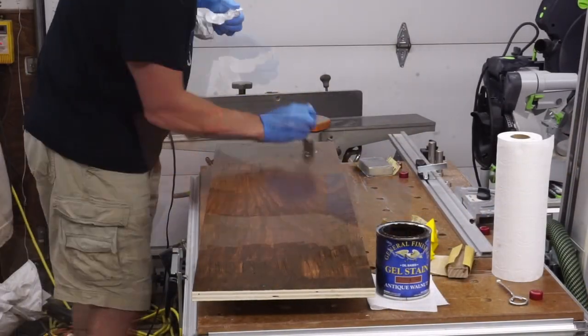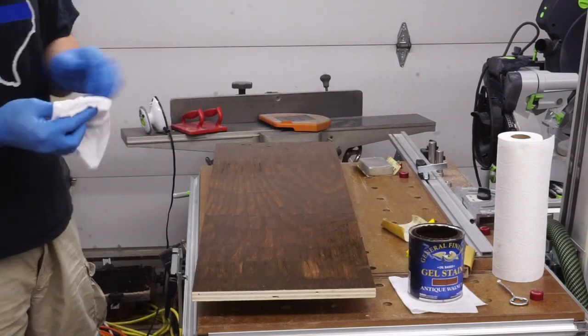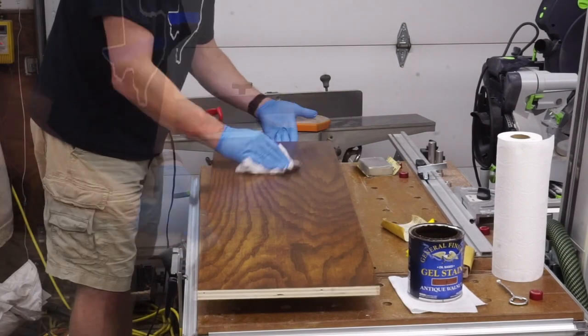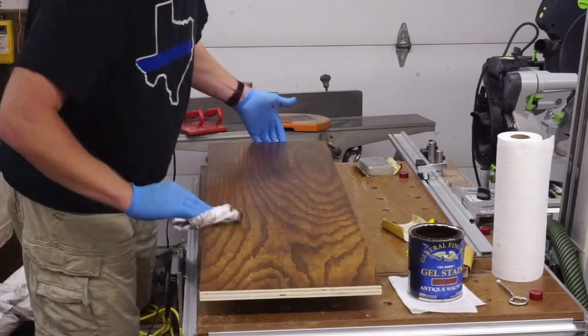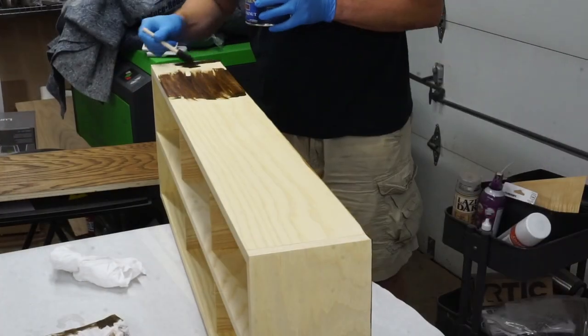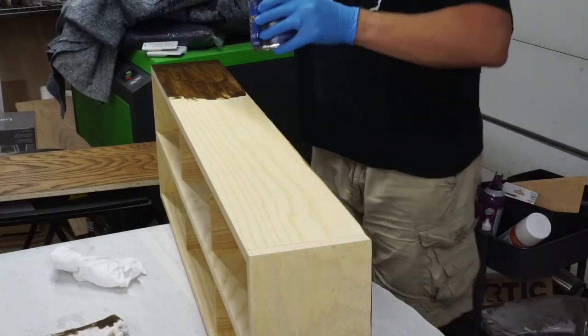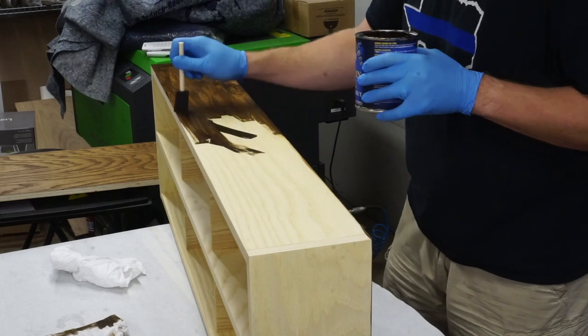Next was to stain everything using matching stain from the vinyl album stand project. This was Gentle Finish's Antique Walnut Gel Stain. It goes on pretty easy, but I have learned not to work with too large of an area at one time as it does start to get tacky rather quickly.